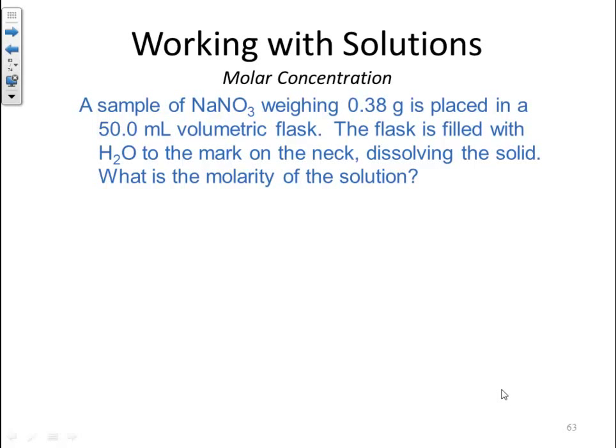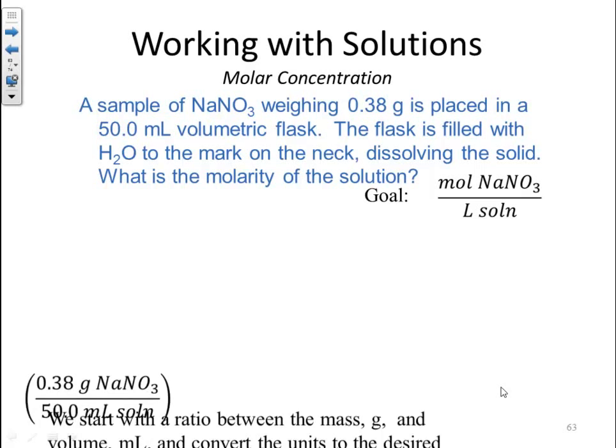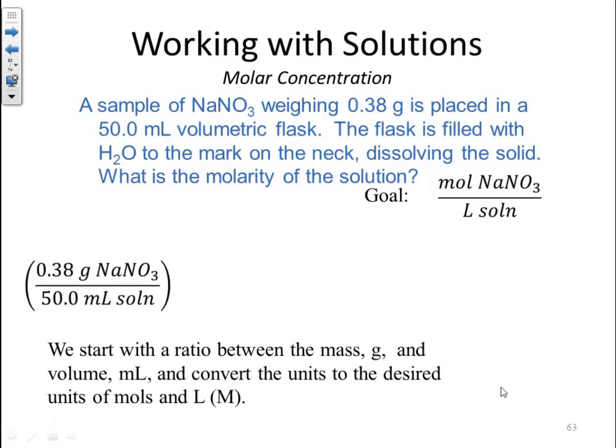Let's do some calculations. I have a sample of sodium nitrate weighing 0.38 grams that is placed in a 50 milliliter volumetric flask. The flask is filled with water to the mark on the neck, dissolving the solid by shaking. What is the molarity of the solution? So our goal is to get to moles of sodium nitrate per liter of solution, and our starting point is with the 0.38 grams. We start with a ratio between the mass in grams and the volume, so we have 0.38 grams of sodium nitrate for every 50 milliliters of solution.